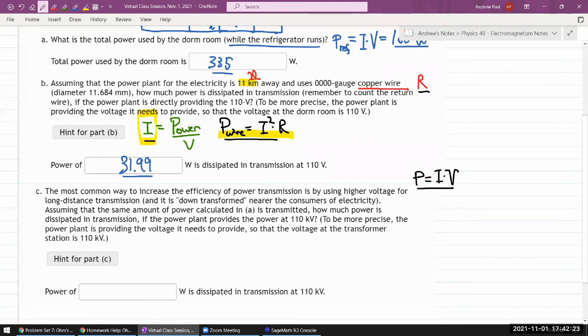And in a couple of weeks, we are going to talk about Faraday's law and how that's used for the transformers that transforms one voltage to another rather efficiently. So for the purpose of this calculation, this is what we would do. So it says, assuming that the same amount of power calculated in A is transmitted, how much power is dissipated in transmission if the power plant provides the power at this high voltage. So what we first need to do is, given how much power we need, so that's going to be the number we work out in A, 335 Watt. So it's going to be provided at current I times voltage. We are told the voltage here, figure out how much current needs to flow through the wires.